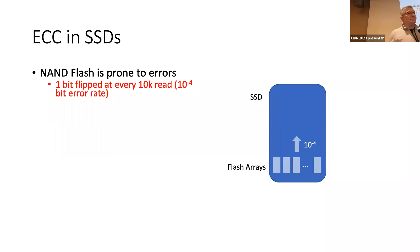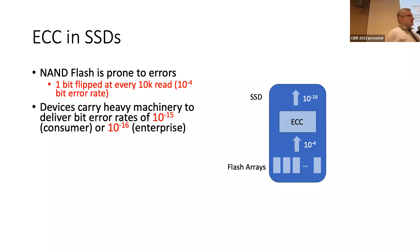If you read directly from them, you're going to get one bit flip roughly at every 10k that you read. Obviously, this is not acceptable. These devices come with very heavy error correction routines that actually bring the error rate to an acceptable amount.